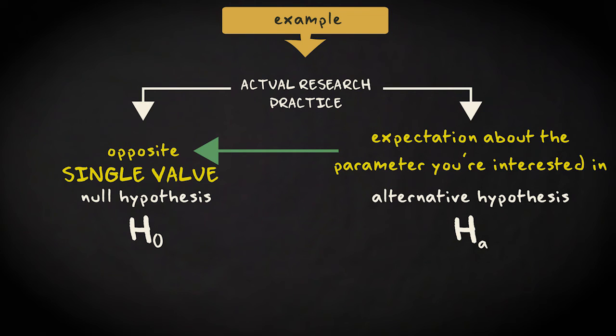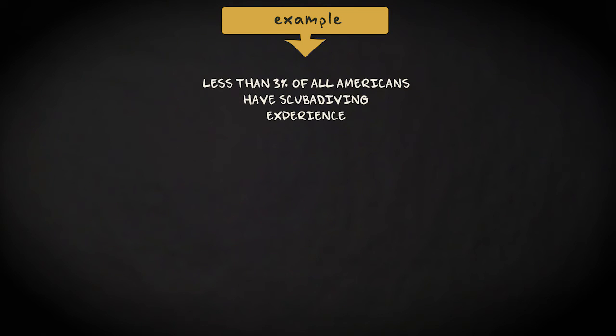Suppose you have good reasons to believe that less than 3% of all Americans have scuba diving experience. What are your null and alternative hypothesis? Well, your expectation is the alternative hypothesis. We write that as follows: HA, colon, pi is smaller than 0.03.